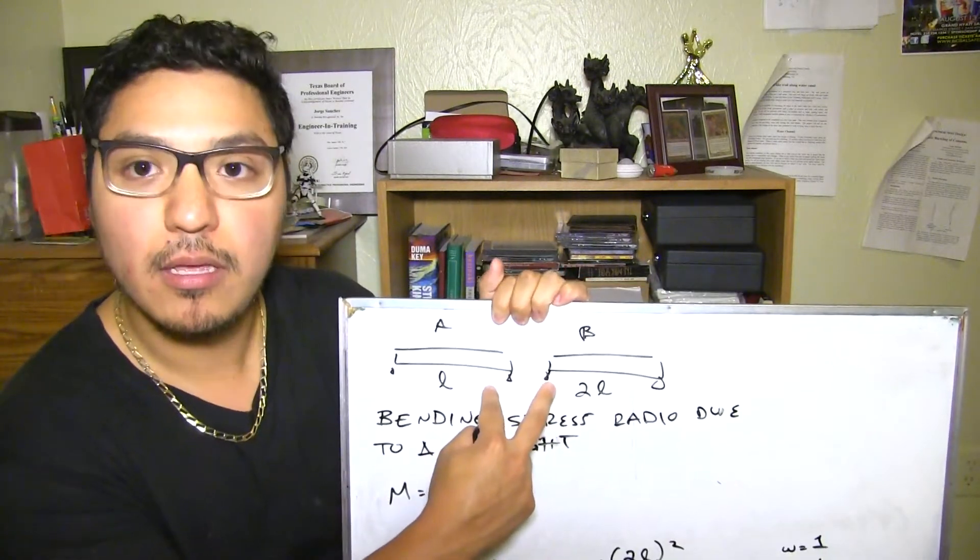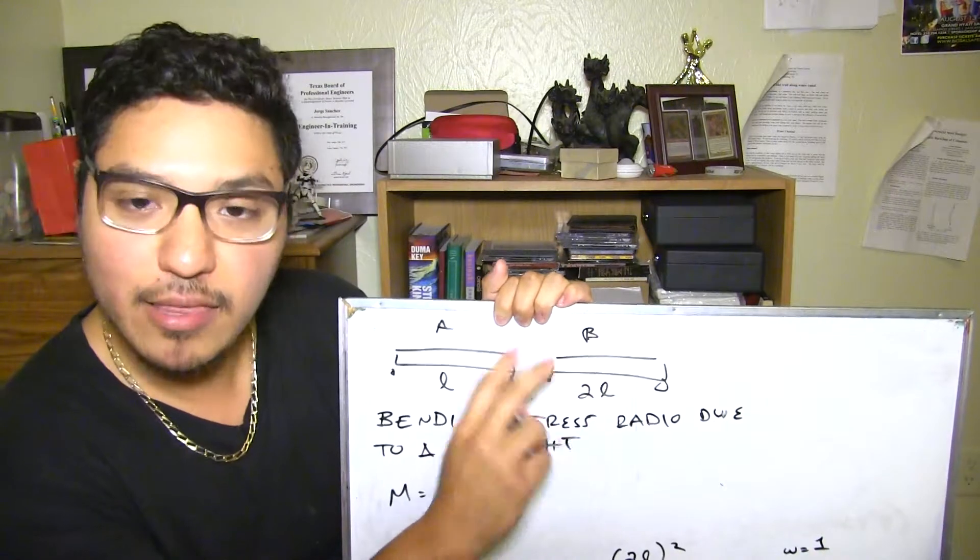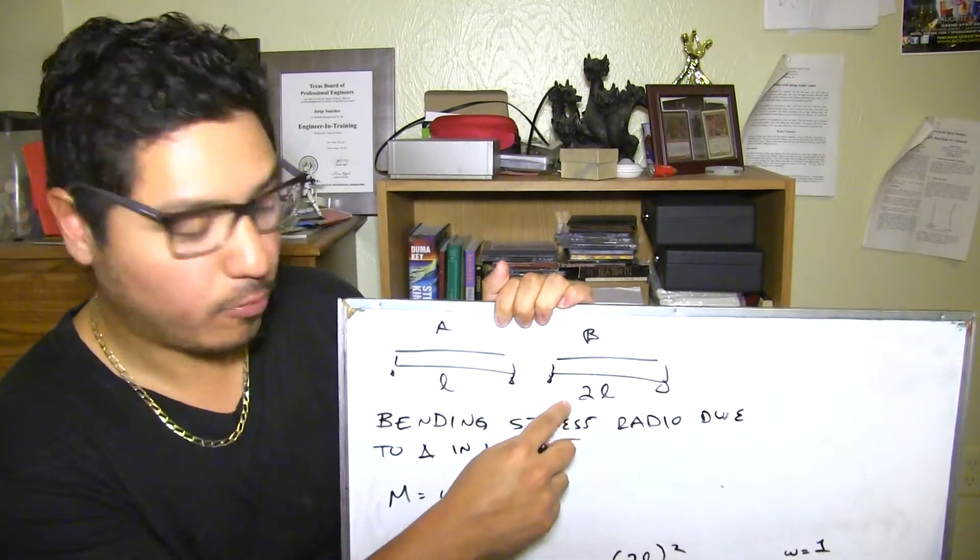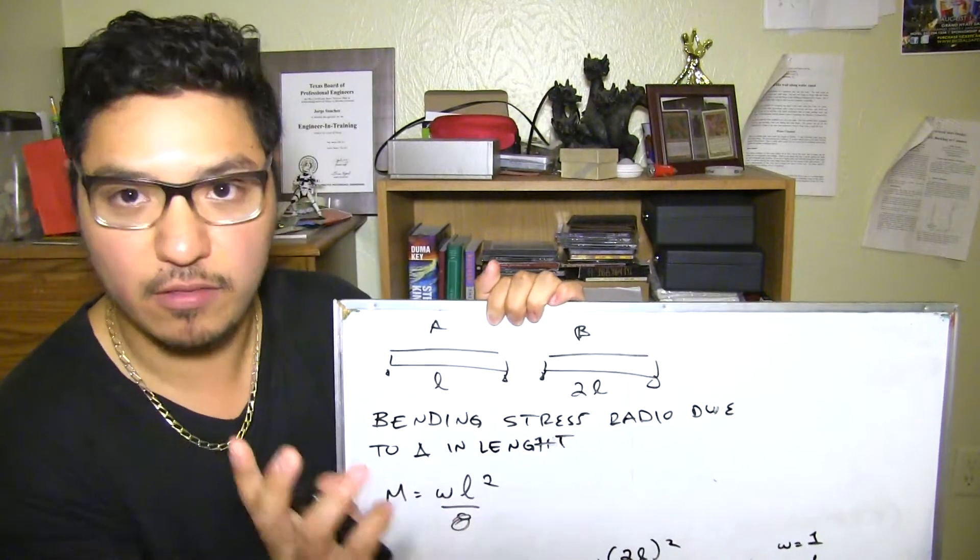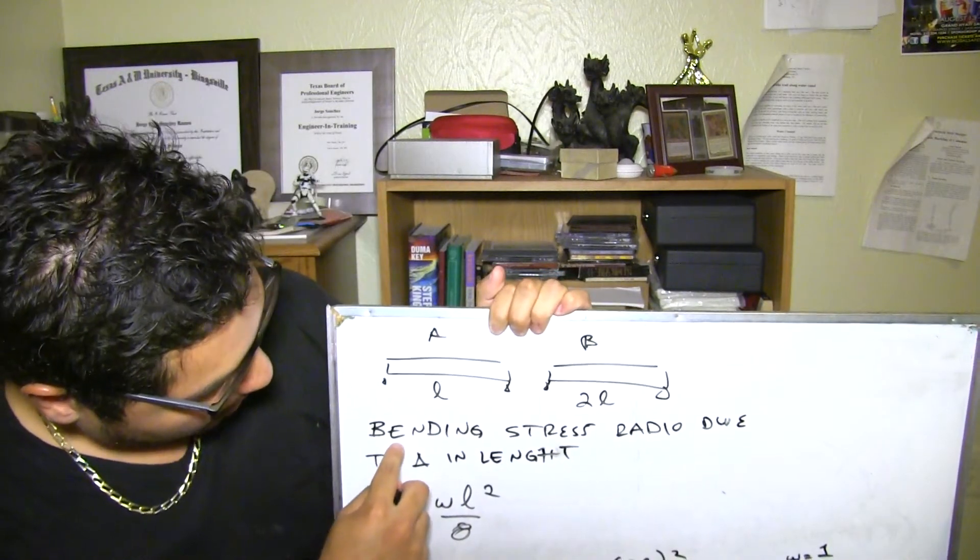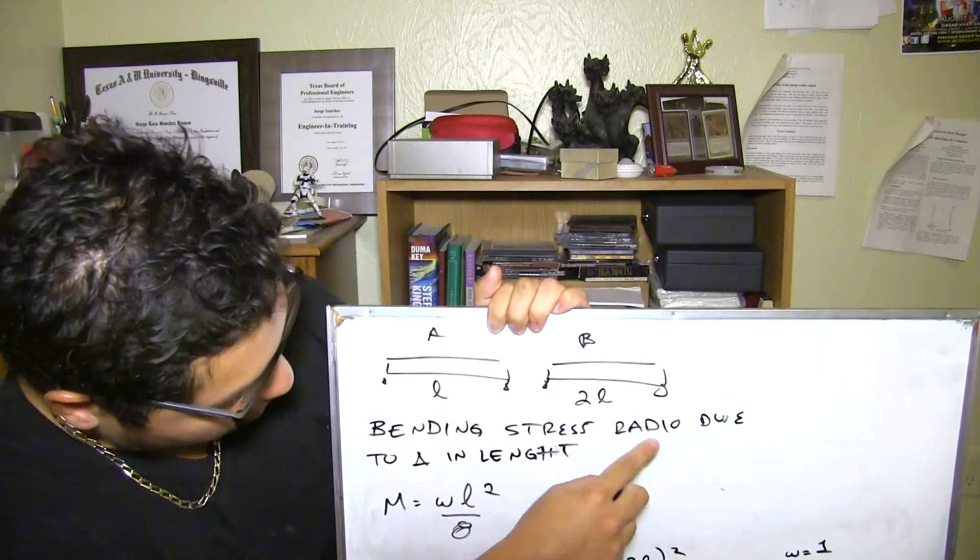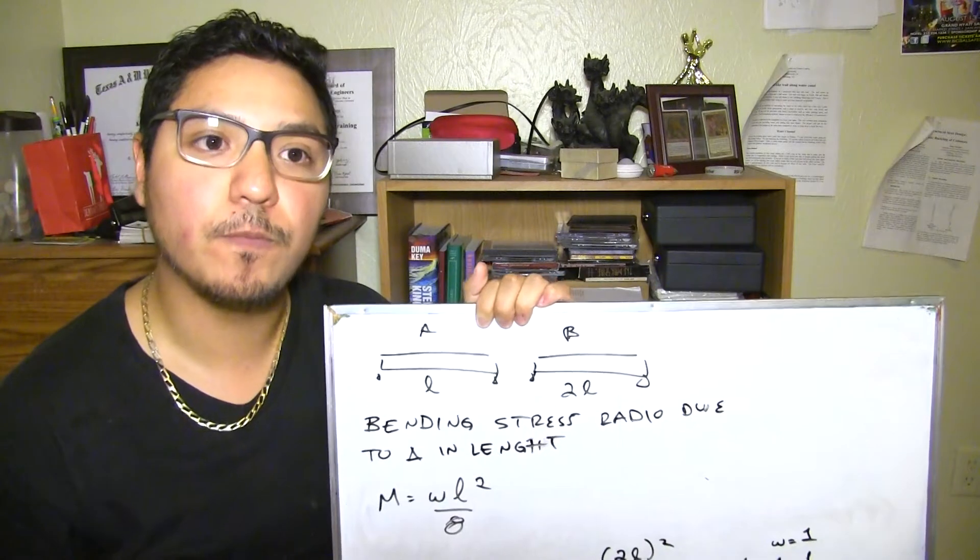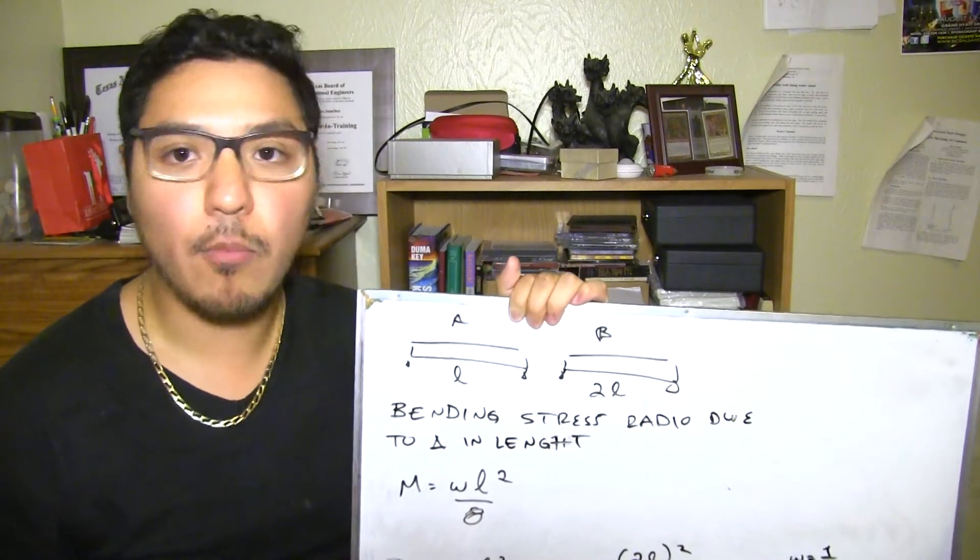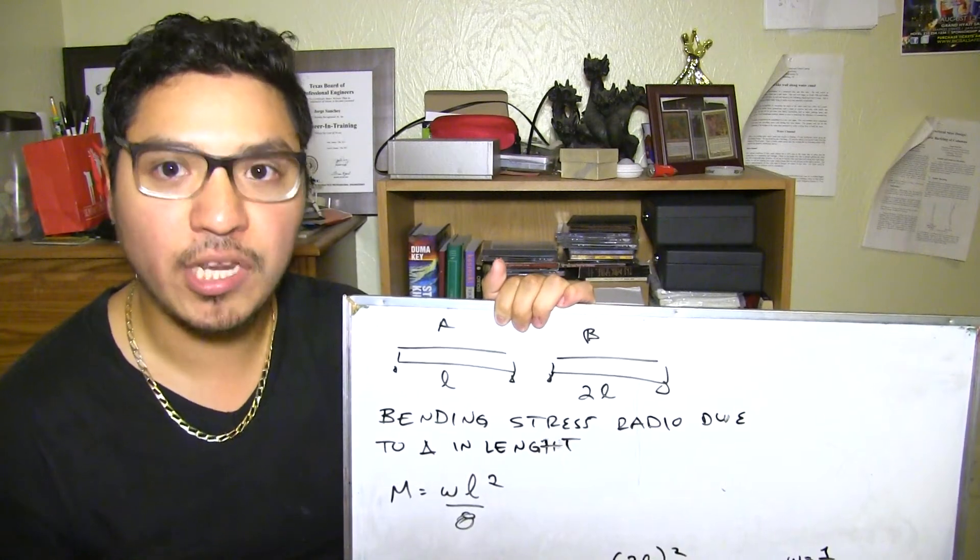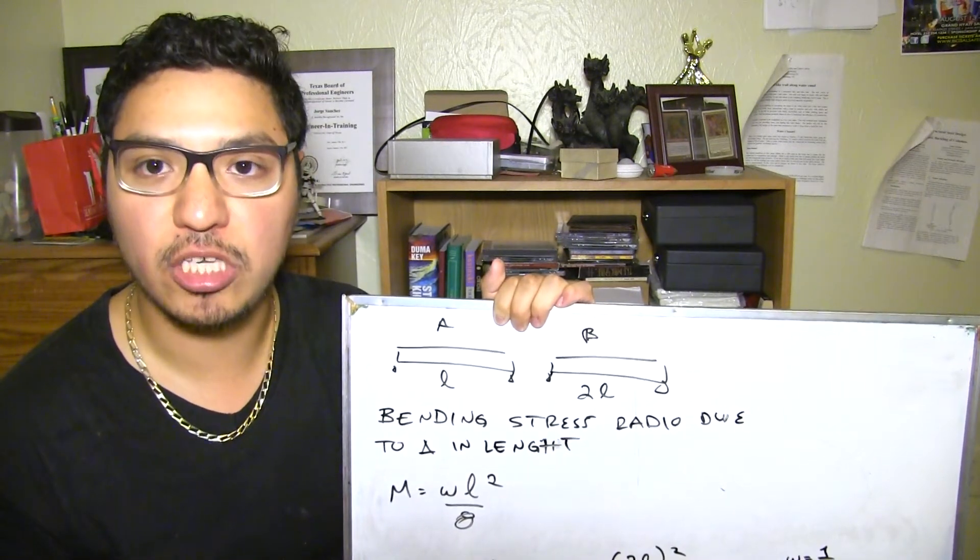So basically we have these two beams. They are simply supported and exactly the same except that one is double the length of the other. Let's say this is 10 feet, this is 20 feet, just to give an example. What they are asking is: what is the bending stress ratio due to changing length? Basically, how big will the moment be based on increasing the length even if you have the same conditions.